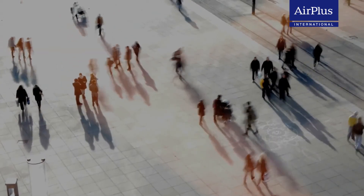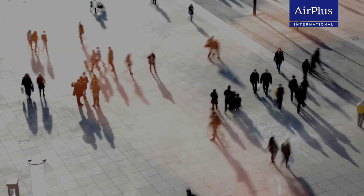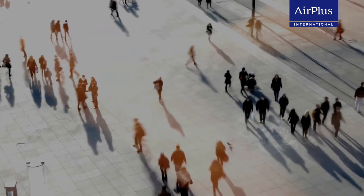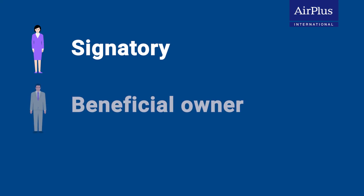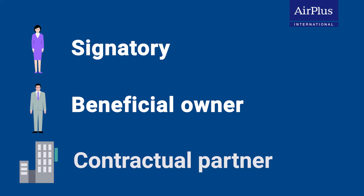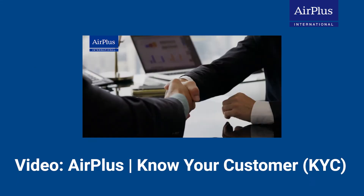In the KYC process, we have to identify three specific groups of people: the contract signatory, also known as the signatory; the beneficial owner or owners; and finally the contracting party. The linked video shows you how to find out who in your company belongs to each of these groups of people.